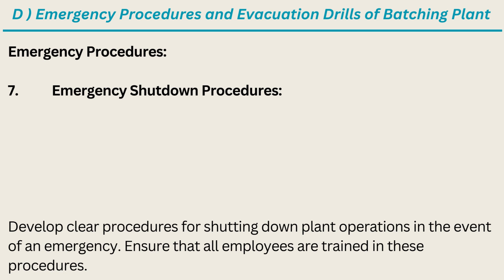7. Emergency Shutdown Procedures — develop clear procedures for shutting down plant operations in the event of an emergency. Ensure that all employees are trained in these procedures.